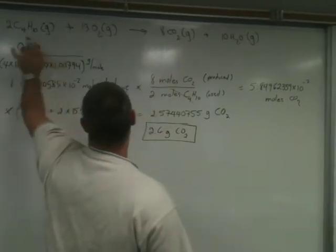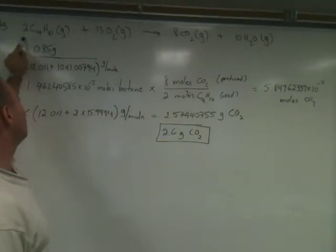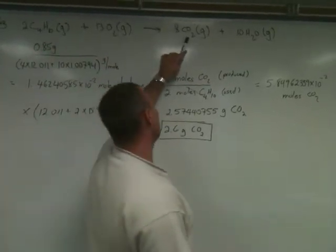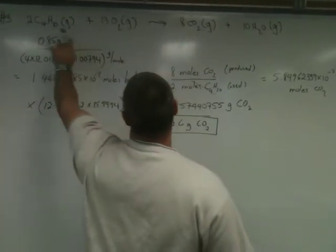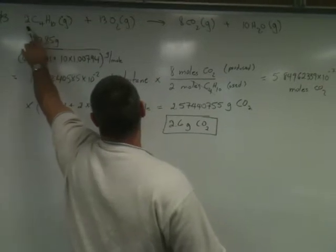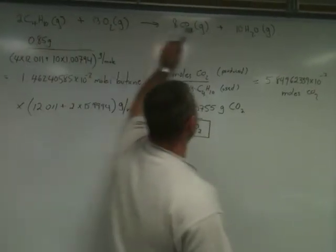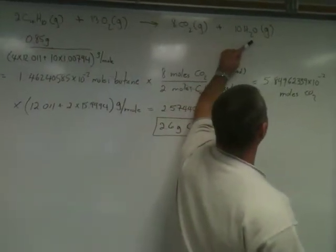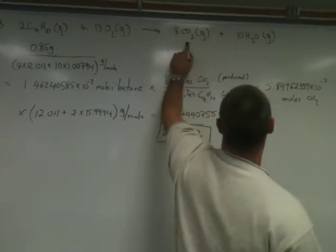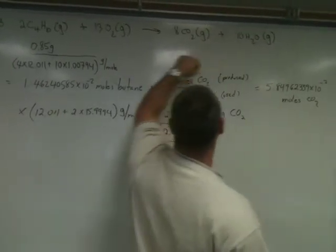So we have here two butane molecules, and we balanced it by putting eight carbon dioxides. There were 10 hydrogens in butane, but two butanes gives you 20 hydrogens, so we put 10 times H2O, which gives you the 20 hydrogens. Then we have 16 plus 10, 26 oxygens.